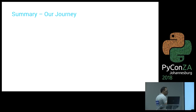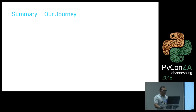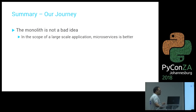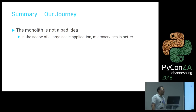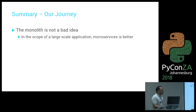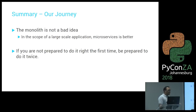That is the journey of how Career Junction went from a monolith to the decision to go microservices — a span of four years covered in roughly 20 minutes. Two key takeaways: first, the monolith is not a bad idea. If you can get away with it and your codebase doesn't grow that often, by all means do so. But for large-scale applications, I'd definitely recommend microservices. Second: if you are not prepared to do it right the first time, be prepared to do it twice. That's what Career Junction fell into — it took us two years to realize we needed to do it a second time.